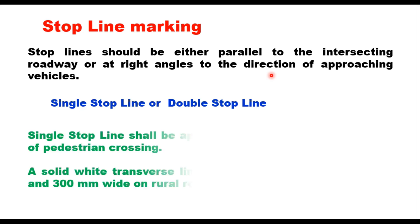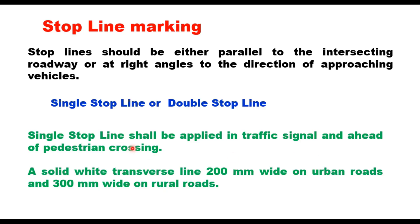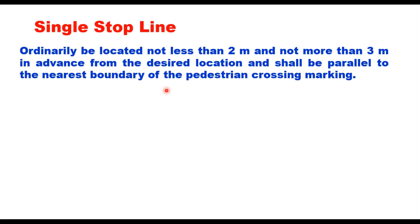Stop line marking on a side road shall be supplemented with a stop sign. The stop line may be either a single line or a double stop line. A single stop line shall be applied at traffic signals and ahead of pedestrian crossings. It is a solid white transverse line 200 mm wide on urban roads and 300 mm wide on rural roads. A single stop line should generally be located not less than 2 meters and not more than 3 meters in advance from the desired location, parallel to the nearest boundary of the pedestrian crossing marking. When there is no pedestrian crossing, the single stop line shall be placed not less than 1.25 meters and not more than 9 meters from the nearest carriageway edge of the intersecting road, and shall be extended across all approach lanes — usually to the center line, or in the case of a one-way street, to the right curb or pavement edge.